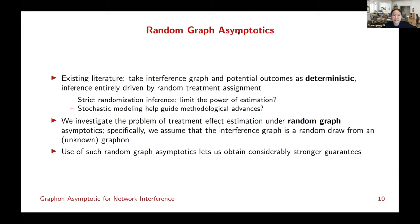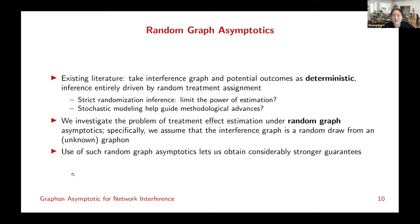Now, regarding the random graph asymptotics in the title: in the existing literature, people usually take the interference graph and potential outcomes as deterministic, and inference is entirely driven by random treatment assignment. We naturally ask: does such strict randomization inference limit the power of estimation? Maybe some stochastic modeling can help guide methodological advances. In this project, we investigate treatment effect estimation under random graph asymptotics, and we'll see that this lets us obtain considerably stronger guarantees.